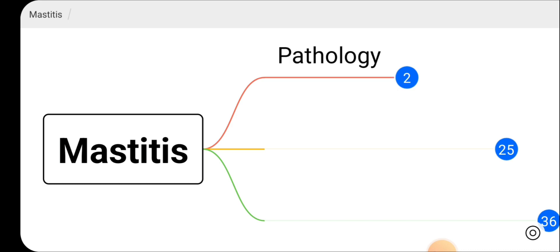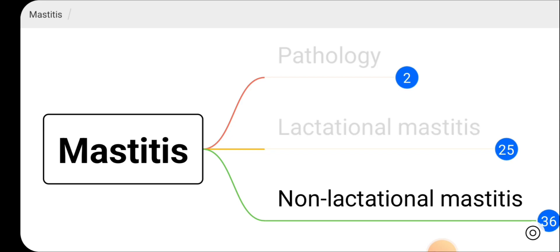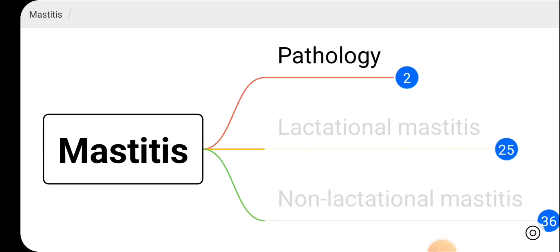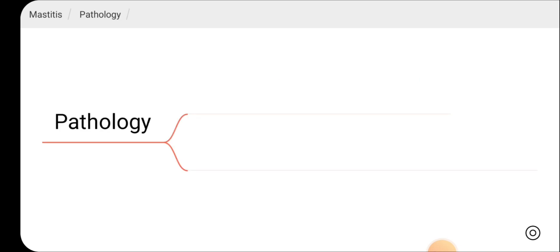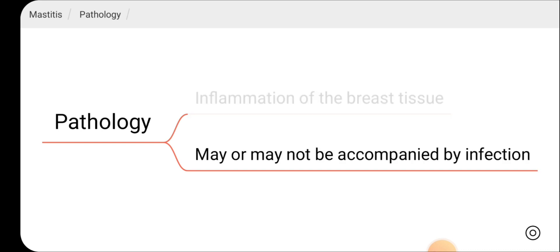We will look at the pathology, lactational mastitis and non-lactational mastitis. Mastitis has two main clinical entities: lactational mastitis and non-lactational mastitis. There are a few basic things you need to know. By definition, mastitis is inflammation of the breast tissue, and it could be either infectious or non-infectious — so an infection may or may not be involved.